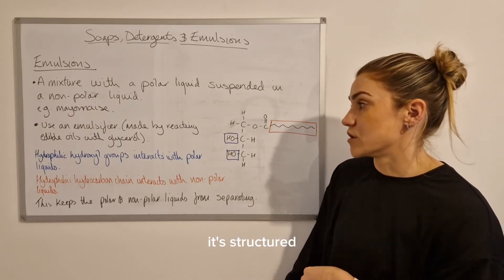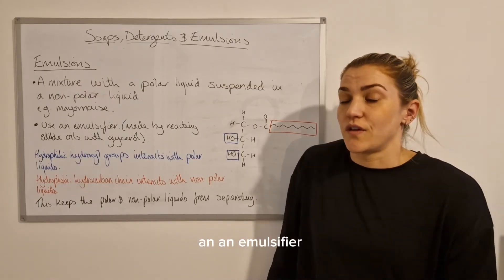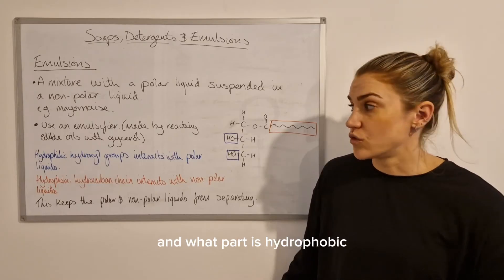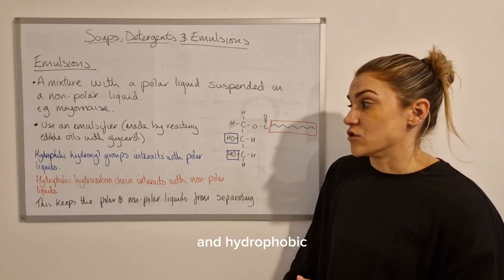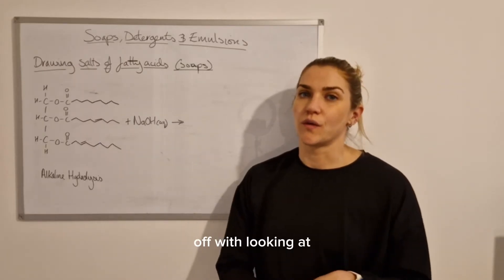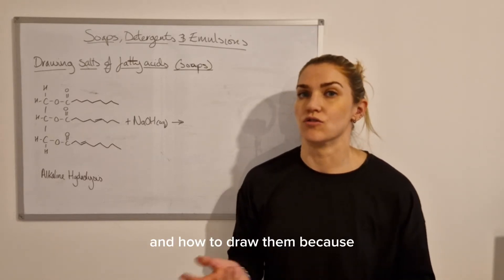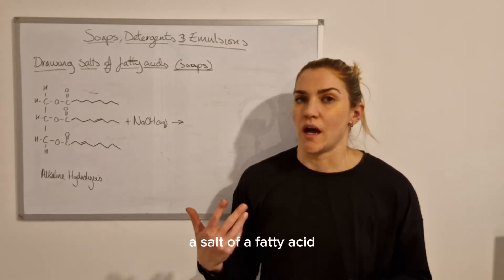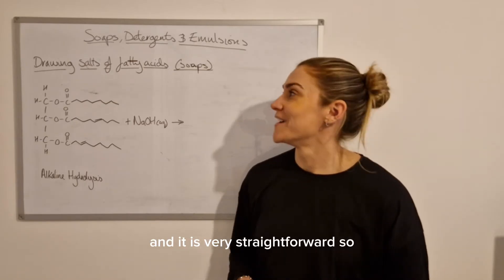Because the emulsifier has both the hydrophilic and hydrophobic parts, it allows it to keep the non-polar and polar liquids from separating, holding them together in close proximity. When you are explaining how a molecule can act as an emulsifier, you need to make sure you name what part is hydrophilic and what part is hydrophobic - for example, the hydrophilic hydroxyl groups and the hydrophobic hydrocarbon tail.